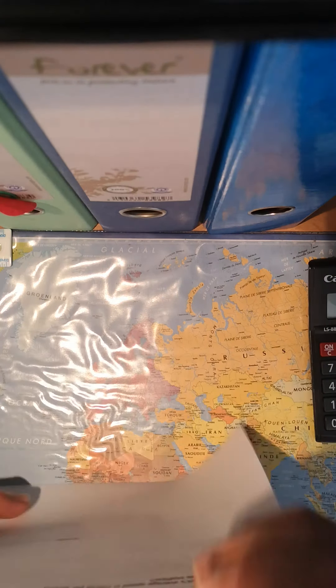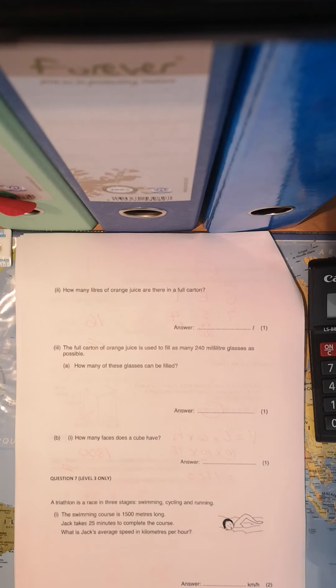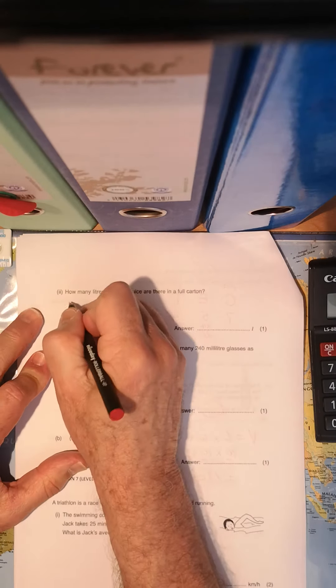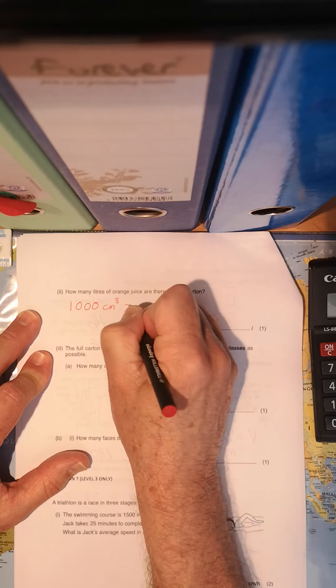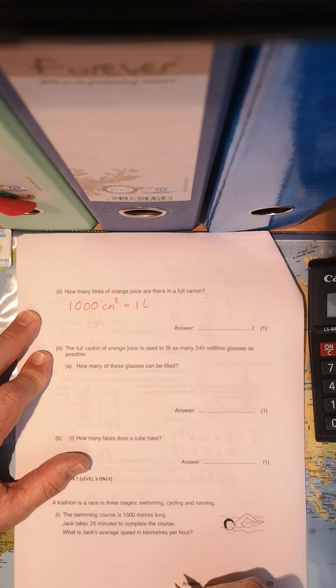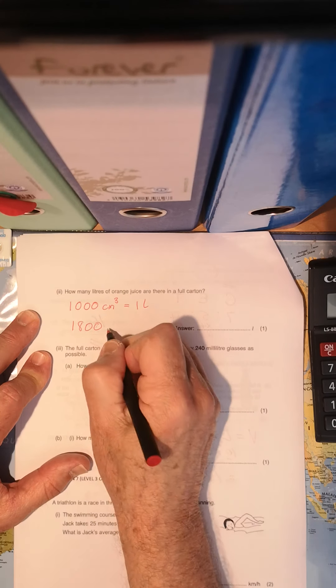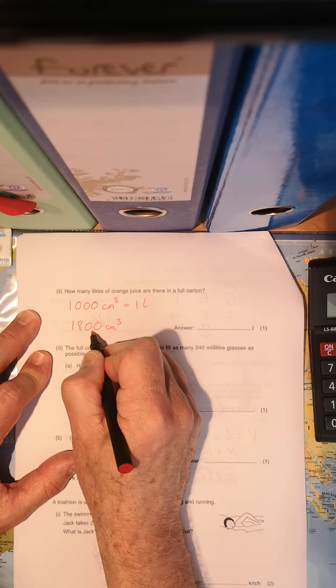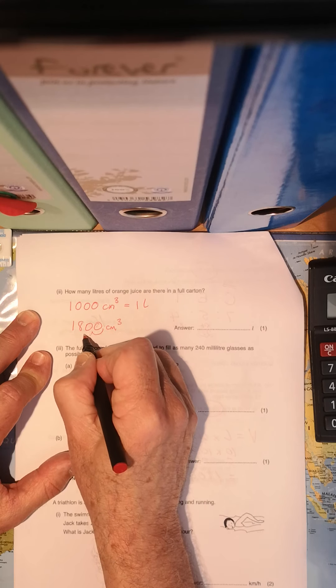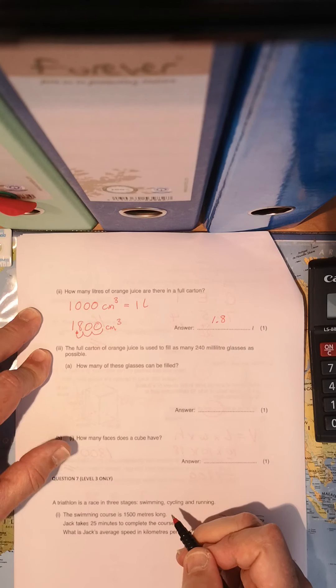Now, next part of that question says, how many liters of orange juice are there in a full carton? So something you need to know straight away is that there are a thousand cubic centimeters in one liter. So our previous answer, 1,800, we are now going to divide that by, yes, a thousand, which means we're moving this decimal point one, two, three places, and that becomes 1.8 liters.